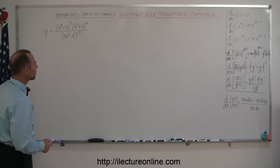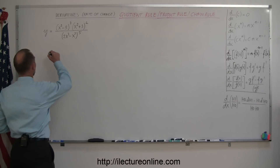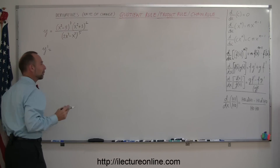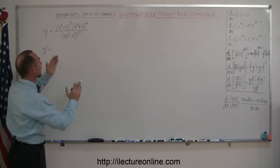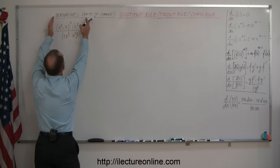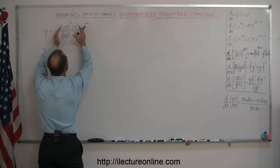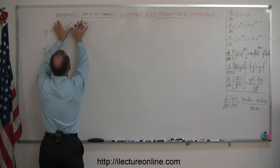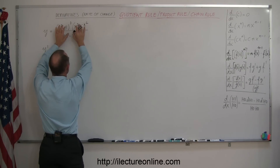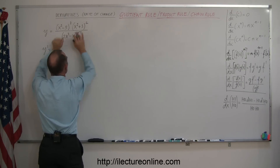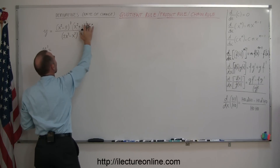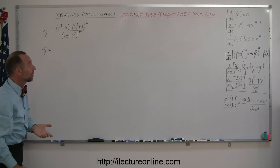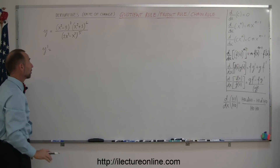So how do you do that? Let's give it a try. Y prime equals — so where do we start? You can think of having the numerator and the denominator, so we're going to start with the quotient rule. In the numerator we have a product, so when we deal with the numerator we're going to use the product rule, and in all cases we have an exponent, so we'll have to use the chain rule anytime we take a derivative.